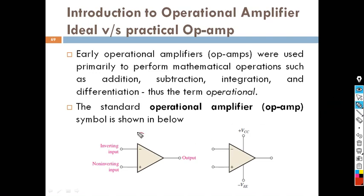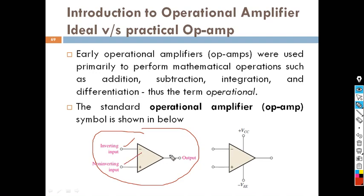In the diagram you can see the symbol for the operational amplifier. This is the symbol for the operational amplifier where this terminal is called the inverting input, this is called the non-inverting input, and this is the output. Other than that, we provide bias using plus VCC and minus VEE.